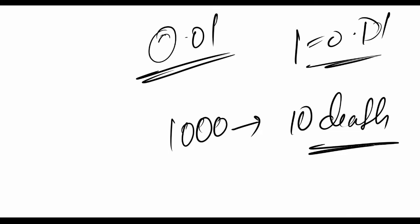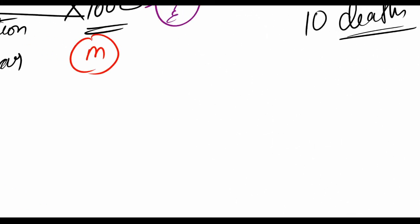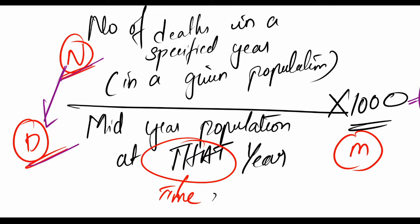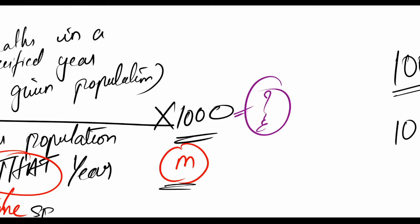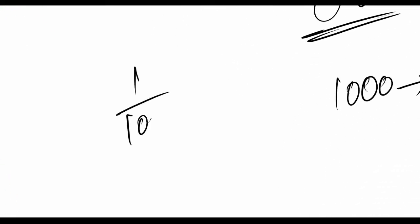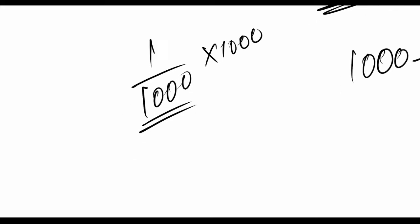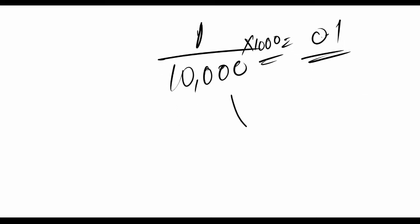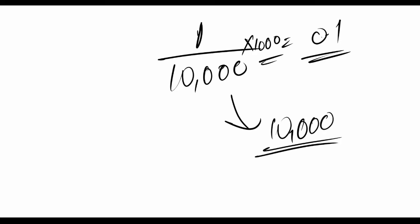Quick revision: rate has four components — numerator, denominator (the numerator must be part of the denominator), time specifier, and multiplier. The multiplier can vary. If instead of 10 per 1000 you had 1 per 10,000, multiplying by 1000 gives 0.1, which is still not a whole number. In that case you can use 10,000 as the multiplier, but you must then specify that the death rate is per 10,000 population.